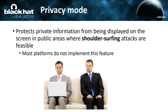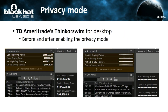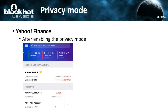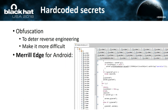Another interesting thing: privacy mode against shoulder-surfing attacks. thinkorswim desktop has a privacy mode — before and after you can see your balances are masked. Whenever you are trading in public spaces and don't want people to see how much money you have invested, this is a good feature. Nevertheless, not all applications implement this. Yahoo Finance for mobile also masks important information.